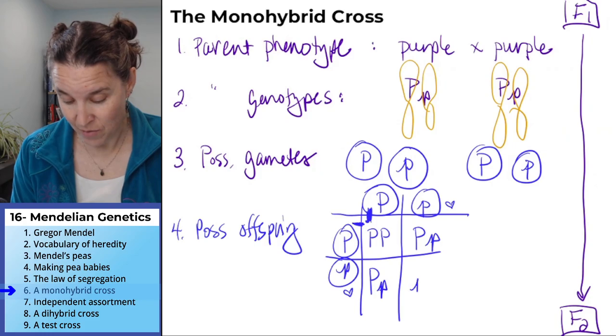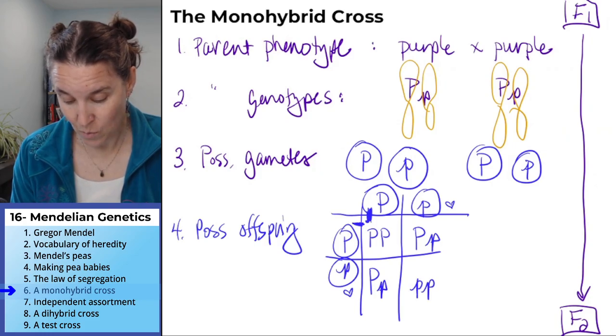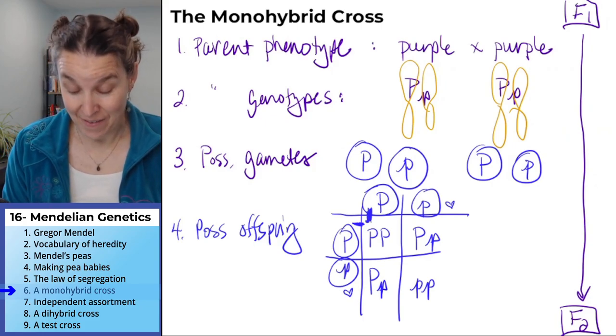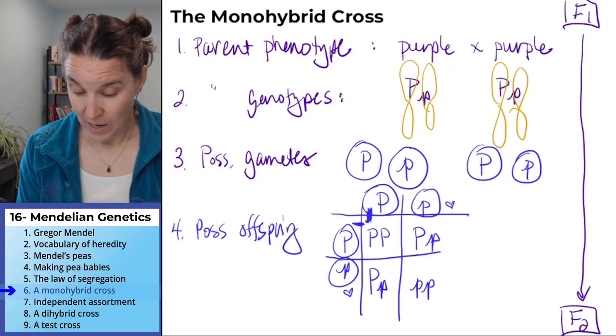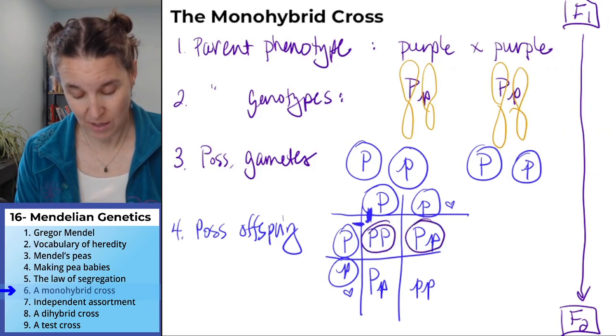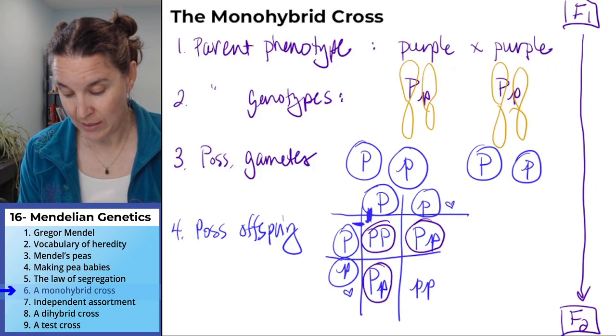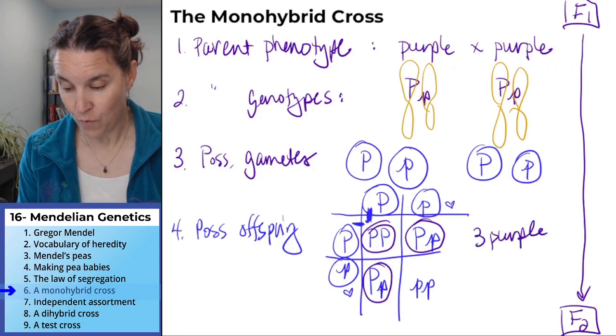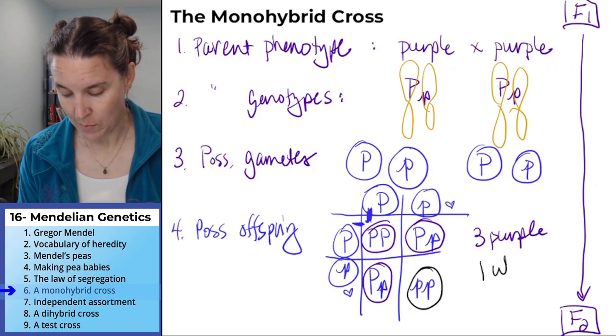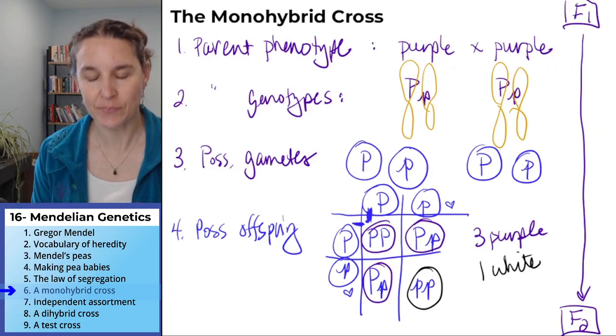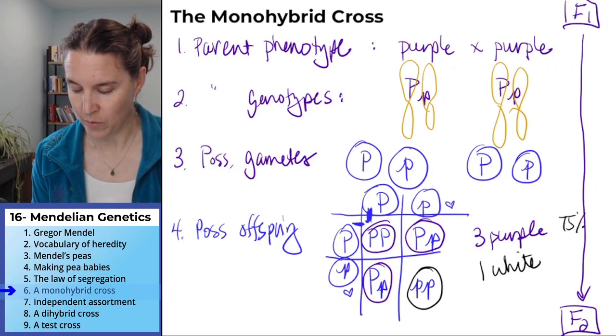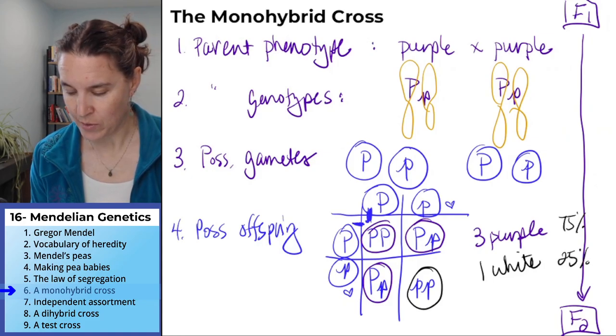A quarter of the babies will have those two little p's combined. We now have one purple plant, two purple plants, three purple plants for every one white plant. Do you see that? Or 75% of them are purple, 25% of them are white.